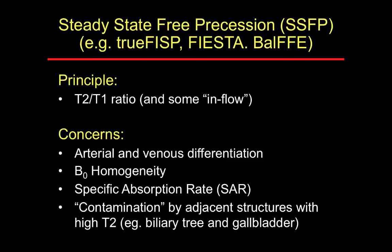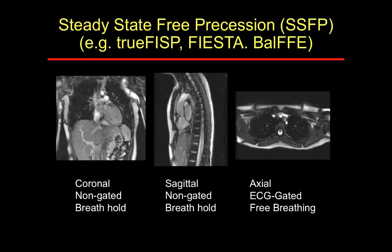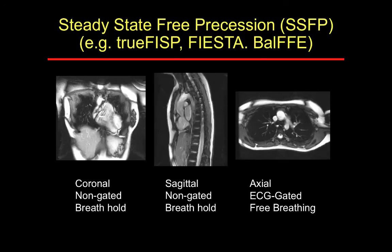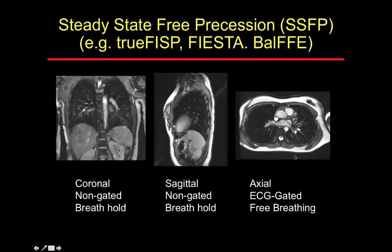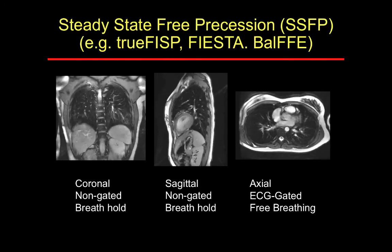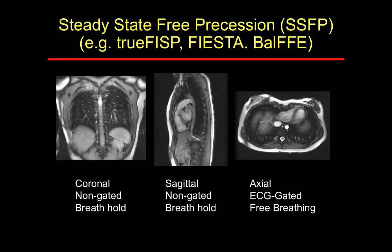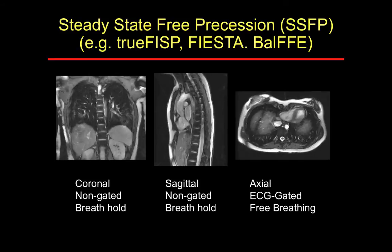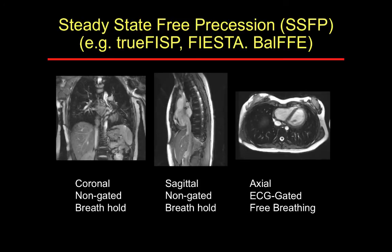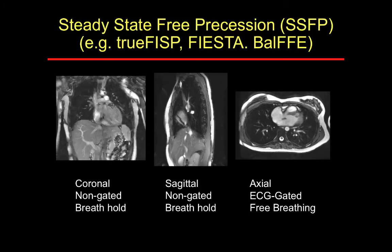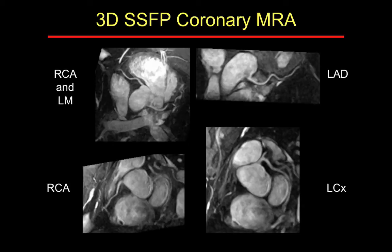Steady-state free precession (SSFP) is another non-contrast technique. It relies on the T2/T1 ratio and has some inflow effect. It is a very fast pulse sequence — two breath-hold acquisitions in the coronal and sagittal plane plus a free-breathing axial acquisition with cardiac gating, all performed within five minutes. This technique is very robust for MRA prescription and quick viewing of vascular structures in the chest or abdomen, and is a preferred method for looking for DVT, central venous thrombus, and coronary arteries.